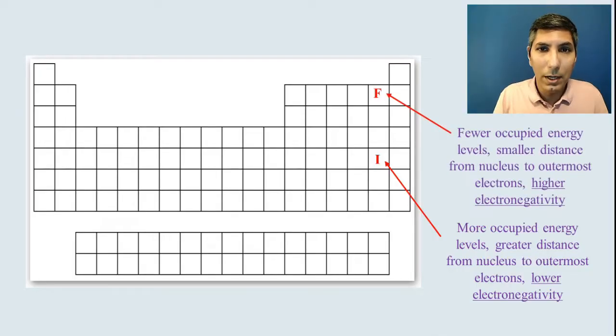On the other hand, fluorine has fewer occupied energy levels. So as a result, there's a smaller distance from the nucleus to those last electrons. So we'd say it has a higher electronegativity.